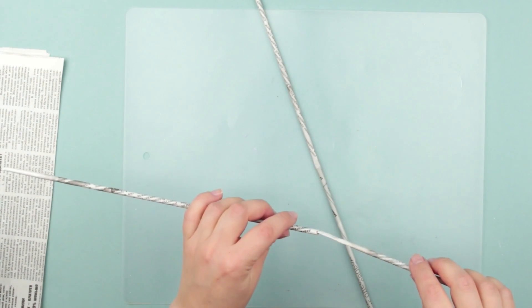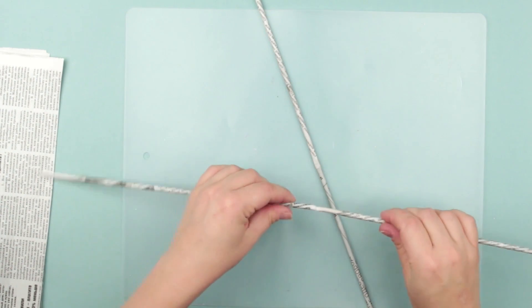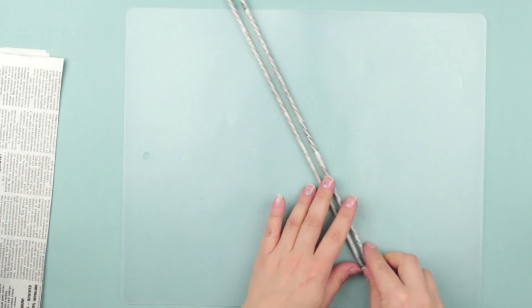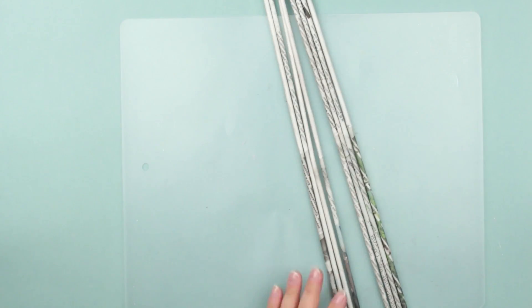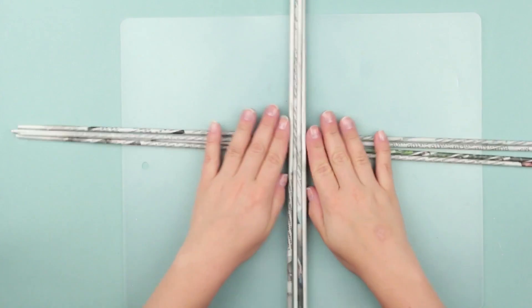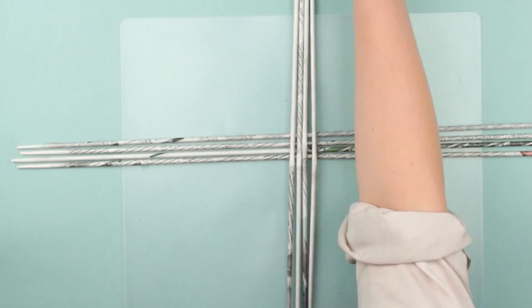When you've prepared enough tubes, join the tube by putting one end into the other. Make eight long tubes. Place the four crossing the other four. This will be a support frame.